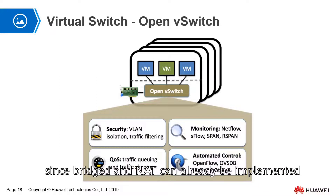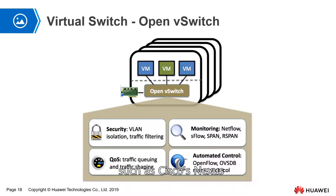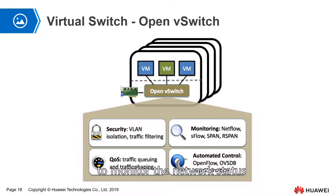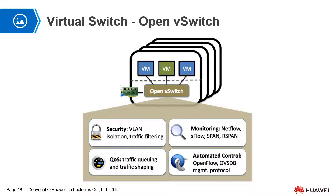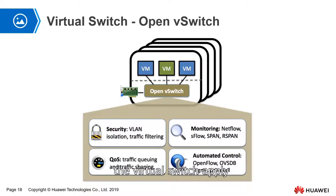Since bridge and NAT can already implement communication between virtual machines, why do many vendors make their own virtual switches, such as Cisco's Nexus 1000V, Open vSwitch, and Huawei's DVS? The first reason is to facilitate management and monitoring — by using a monitoring virtual switch, it is convenient for the administrator to monitor the network status and data traffic in the entire cloud environment. Second, it speeds up packet forwarding and addressing. Compared to bridge, which forwards data based on MAC address, the virtual switch applies a caching mechanism to speed up the forwarding of data packets.